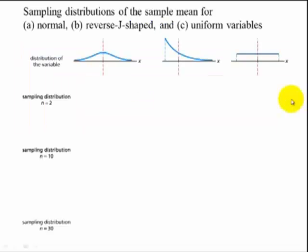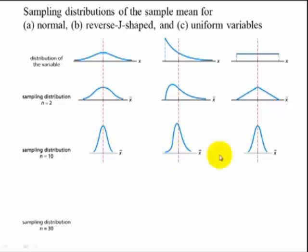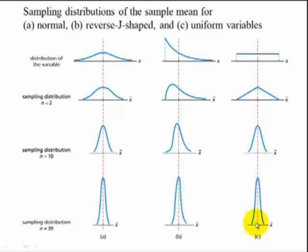Let's look at a visual. Here we have three parent populations: A is normal, B is a reverse J-shaped or negative exponential, and C is a uniform distribution. For a sample size of 2, the normal distribution's sampling means are already normal, B is becoming more normal, and C looks like a triangle. Increasing to sample size 10, we see a clearer pattern, and at 30, all the means are the same. Notice the standard deviation decreases as sample size increases. The CLT states that for sample sizes 30 or more, the sampling distribution of X-bar will become normal regardless of population shape.